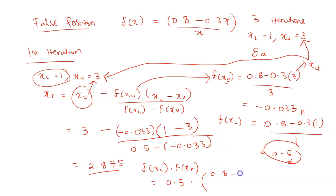0.8 minus 0.3. x is 2.875. 75 divided by 2.875. And this you will get as negative value which is negative 0.010869. So this is obviously less than 0.